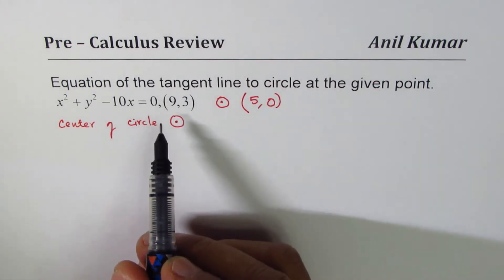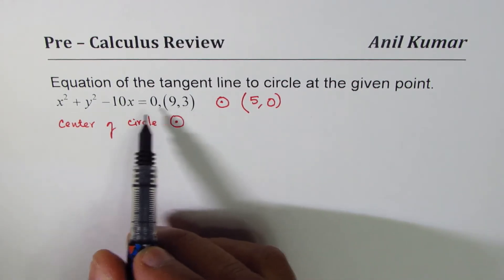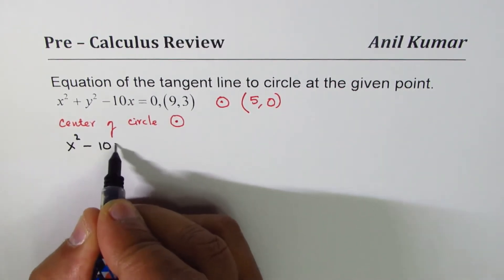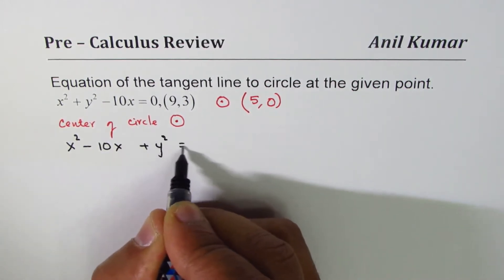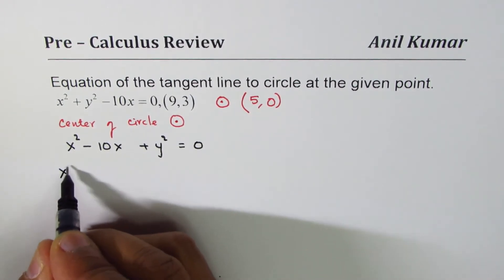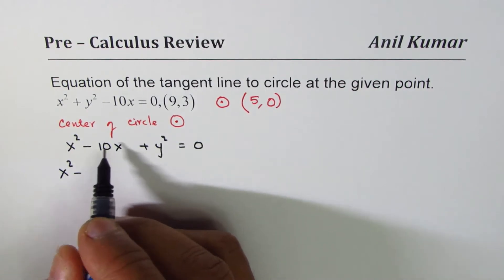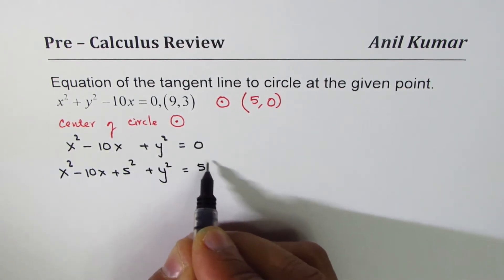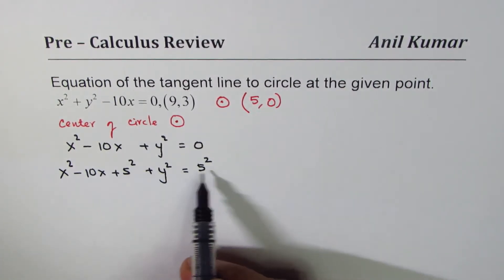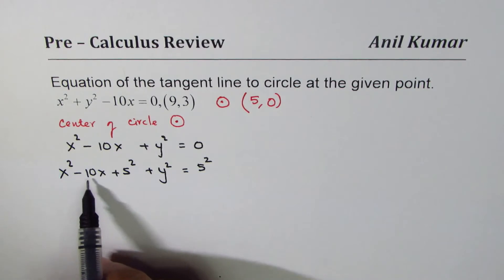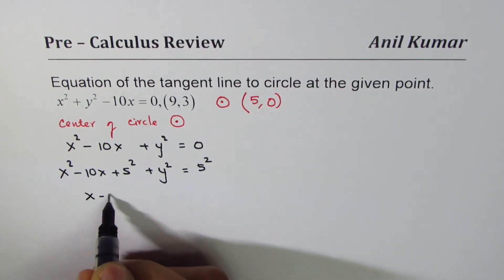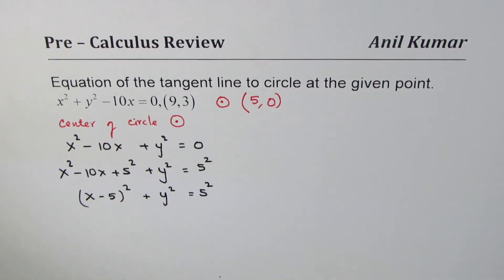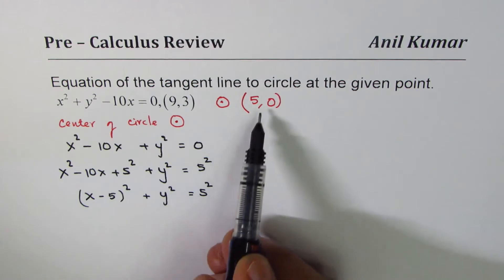Let us see how to figure it out otherwise. We do complete the squares to really find this. So I'll rewrite this equation as x² bringing x terms together, and then we have plus y² equals to 0. We can complete this square by adding the square of half of 10, which is 5. We'll do that on both sides of the equation. x² - 10x + 5² is a perfect square, which could be written as (x - 5)². And we have y² = 5². So that becomes a circle with center at 5, 0.